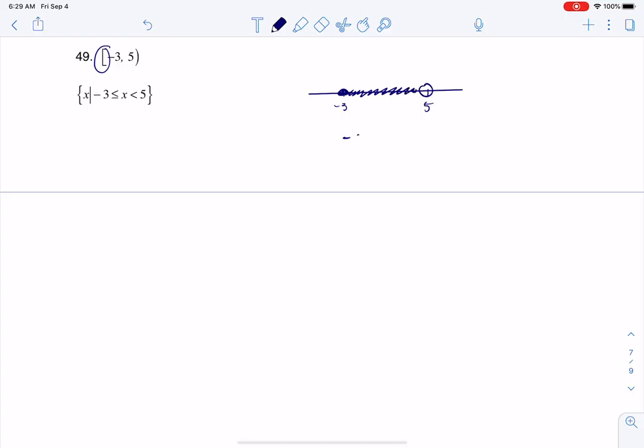If I wanted to write it as an inequality, I would say negative 3 less than or equal to x less than 5. And that is really the basis for set builder notation.